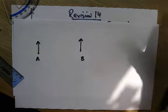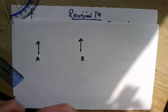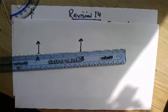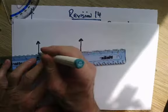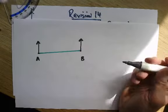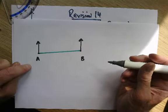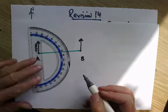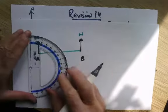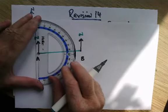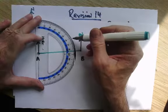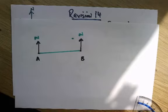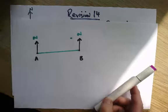It says the bearing of C from A, somewhere around here, is 62 degrees. That's my north line, so 062. It's going off at that point, so they are somewhere along this line.